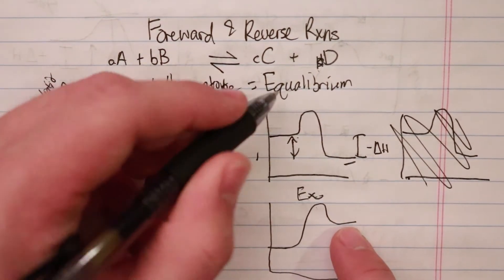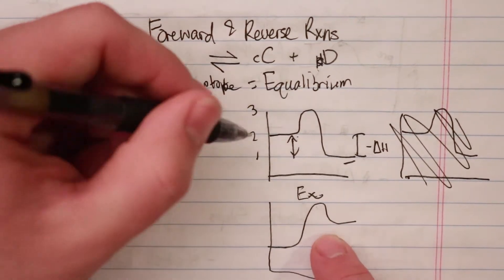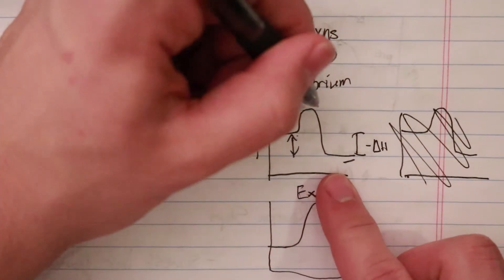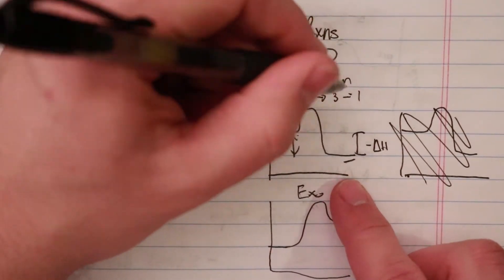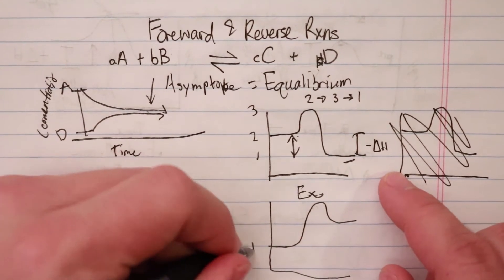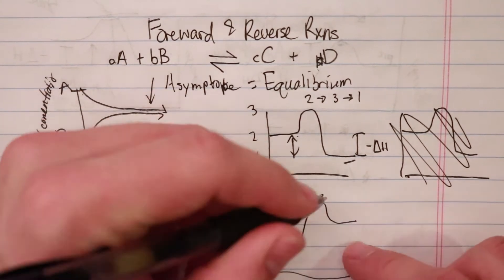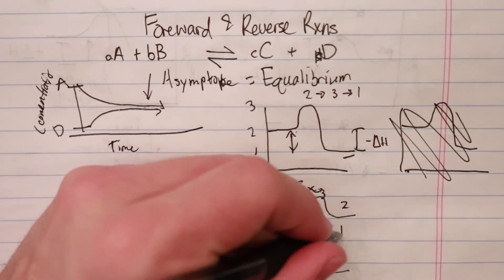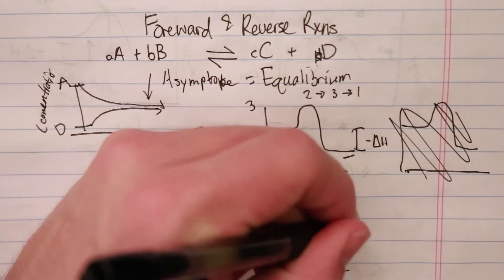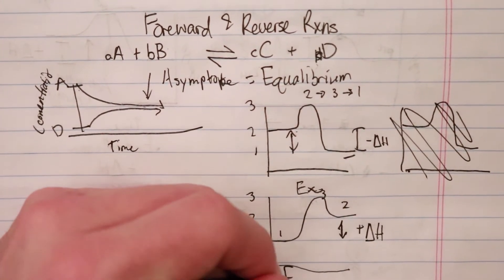Here I started at one. If I call this two and three, this reaction goes from two to three to one. So the reverse reaction will go one to three to two. That's what I have here: one, two, three. It goes from one to three to two. This is the reverse reaction, and we notice that this has a positive delta H, so this is endothermic.